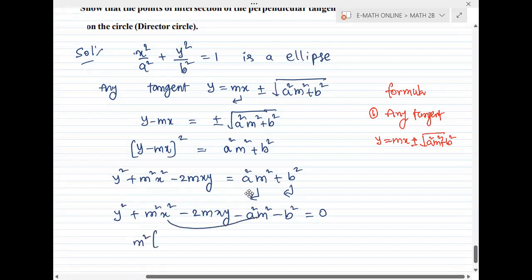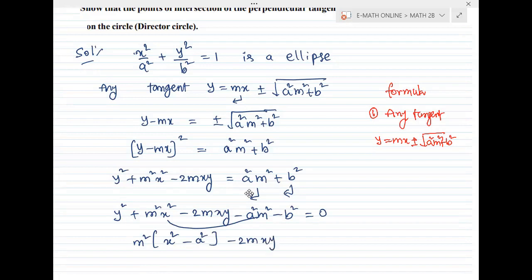Rearranging: y squared plus x squared minus a squared minus 2mxy minus b squared equal to zero. This gives us a quadratic expression.